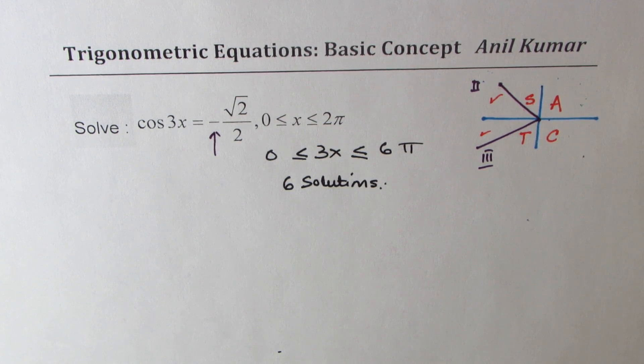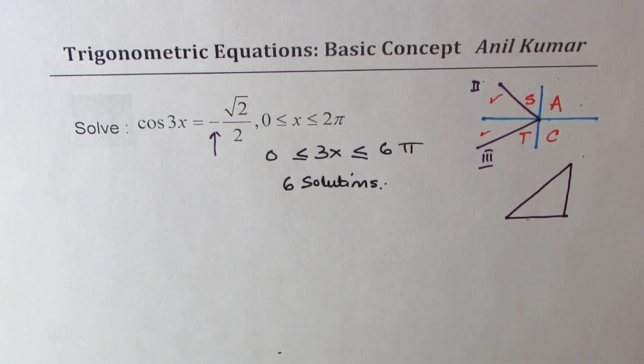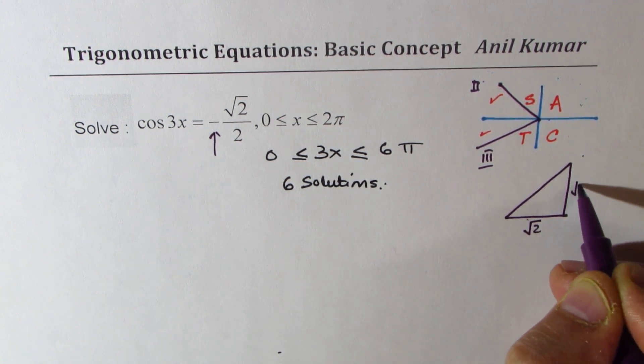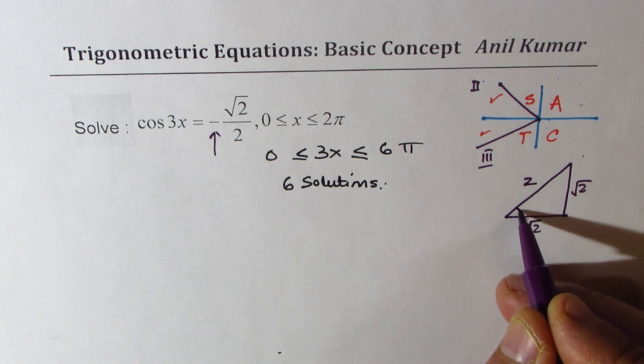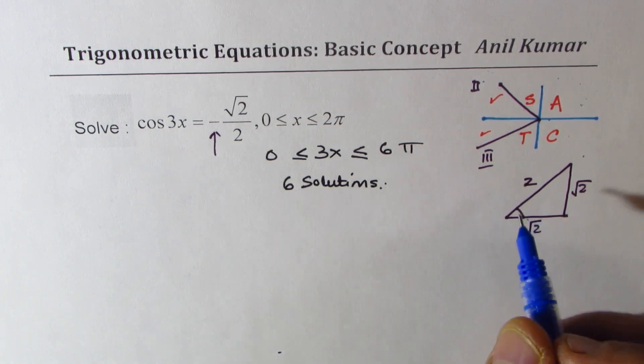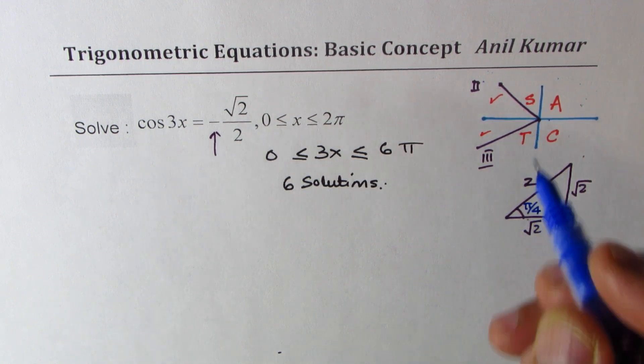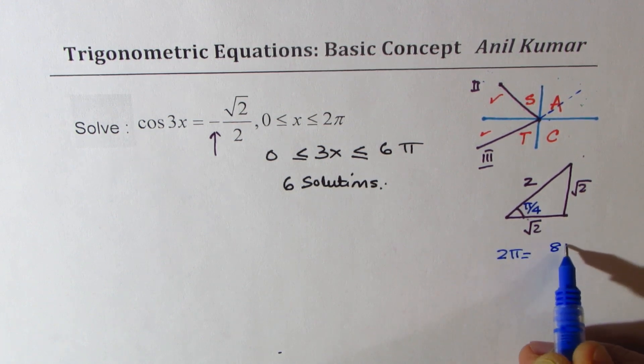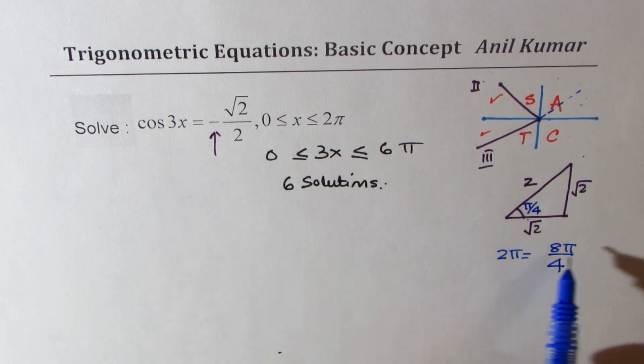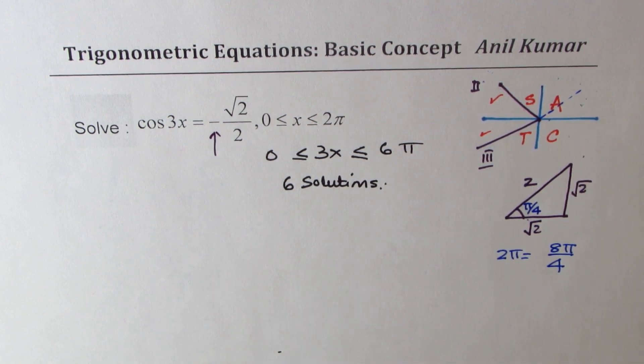Now, which is the special triangle we are looking for? Square root 2 over 2 reminds you of pi by 4. So if each side is square root 2, then the hypotenuse is 2, and the angle here is pi by 4. Now, when you are counting in terms of pi by 4, 2 pi could be written as 8 pi by 4. So we will add 8 pi by 4 to our solutions to get 6 solutions starting from the first 2.